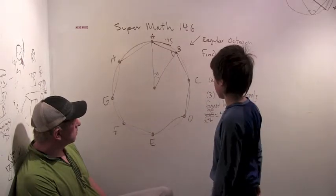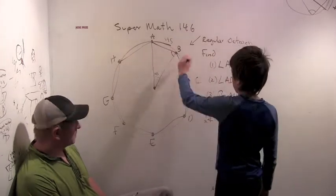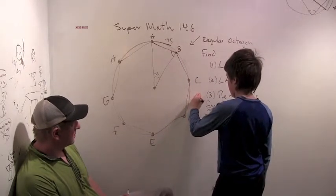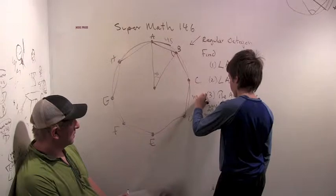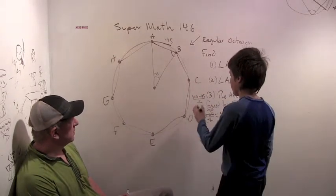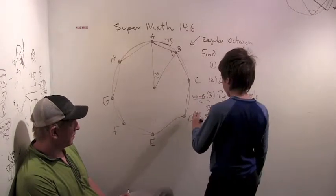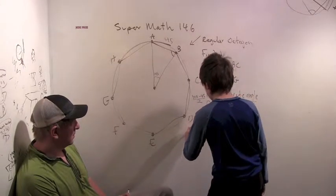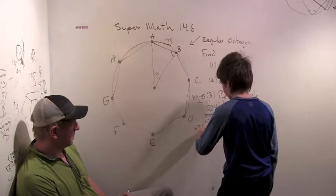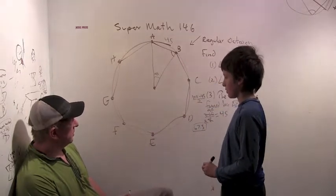Well, since this triangle is isosceles, we have, whatever this angle is, is 180 minus 45 over 2, which is, well, it's 135 over 2, so that's 67.5, is one of these angles. Alright.